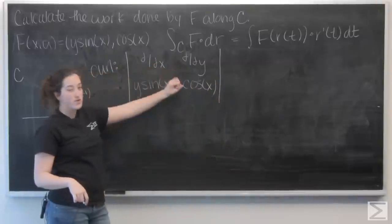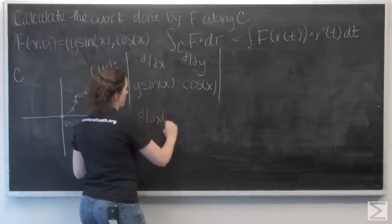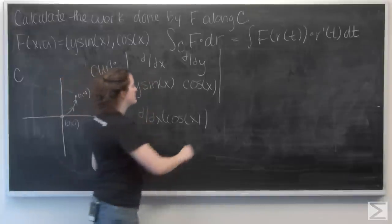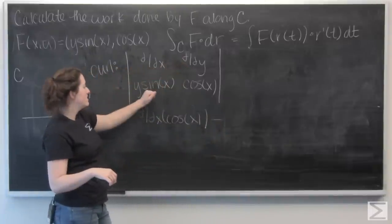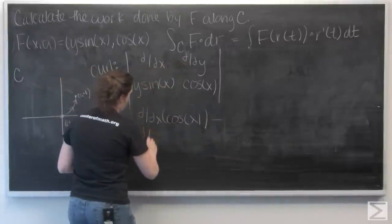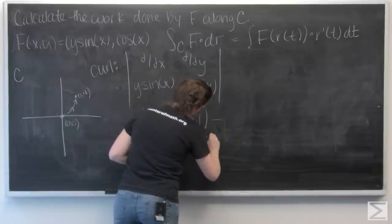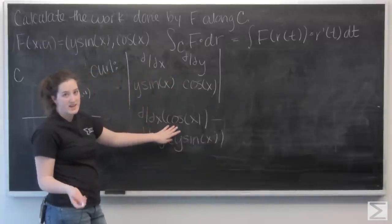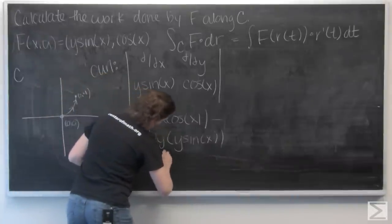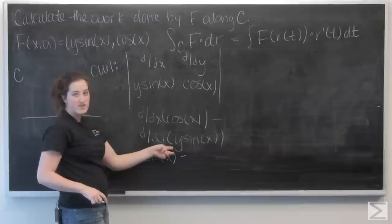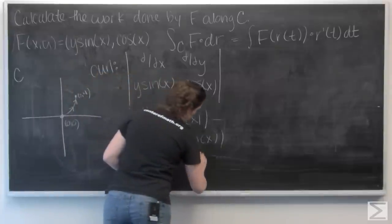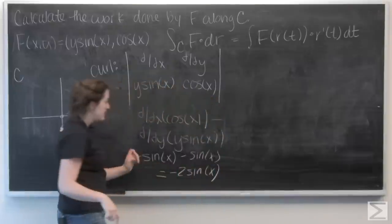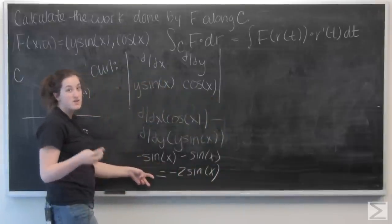To take this determinant, I want to multiply the main diagonal — so d/dx of cosine of x — and then subtract the other diagonal, which is d/dy of y sine of x. The derivative of cosine of x is negative sine of x, and the partial derivative of y sine of x with respect to y is just sine of x. So I get that my curl is negative two sine of x.